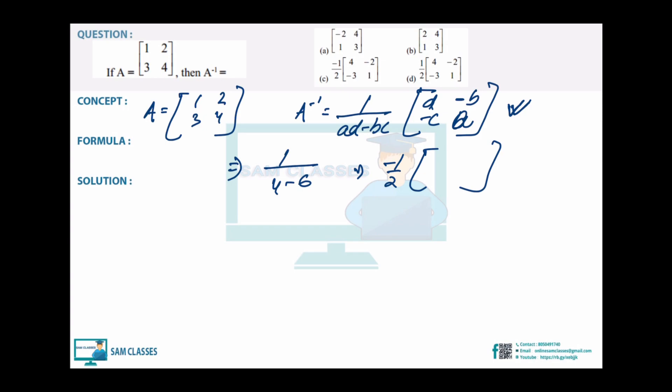Sometimes they take a negative common from the matrix. In that case, check all options carefully. You'd get [[-2,-1],[3/2, 1/2]]... looking at the options: taking -1/2 common gives [[4,-2],[-3,1]], so the answer is option C. You can also verify using A⁻¹ = adjoint(A)/det(A).